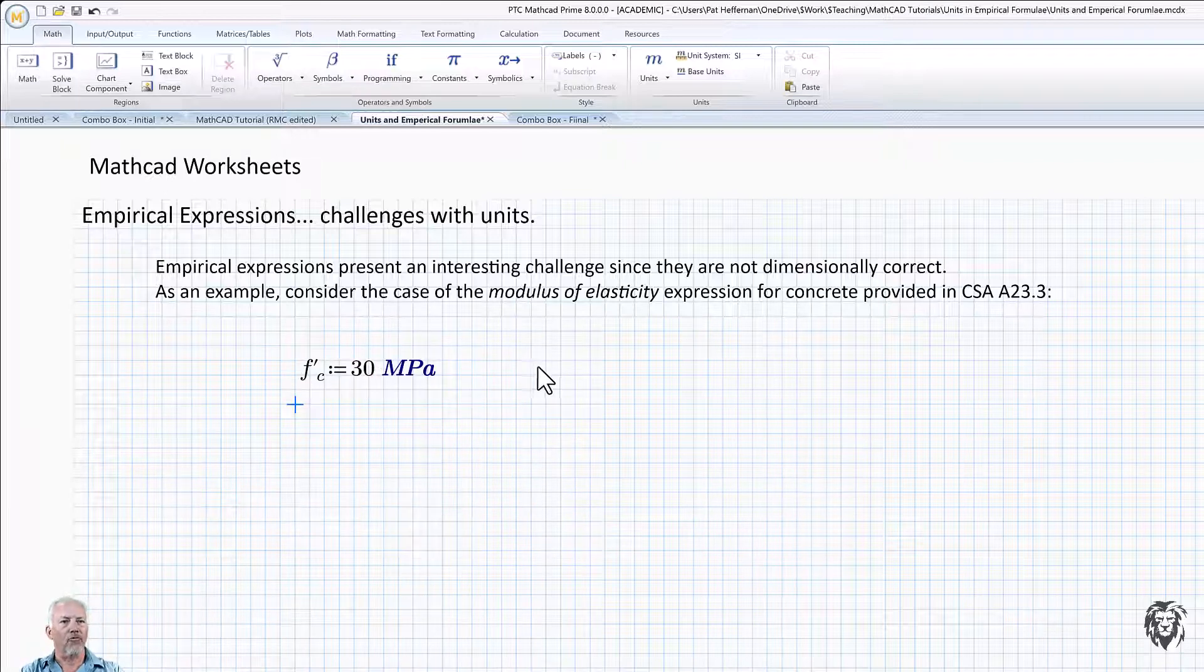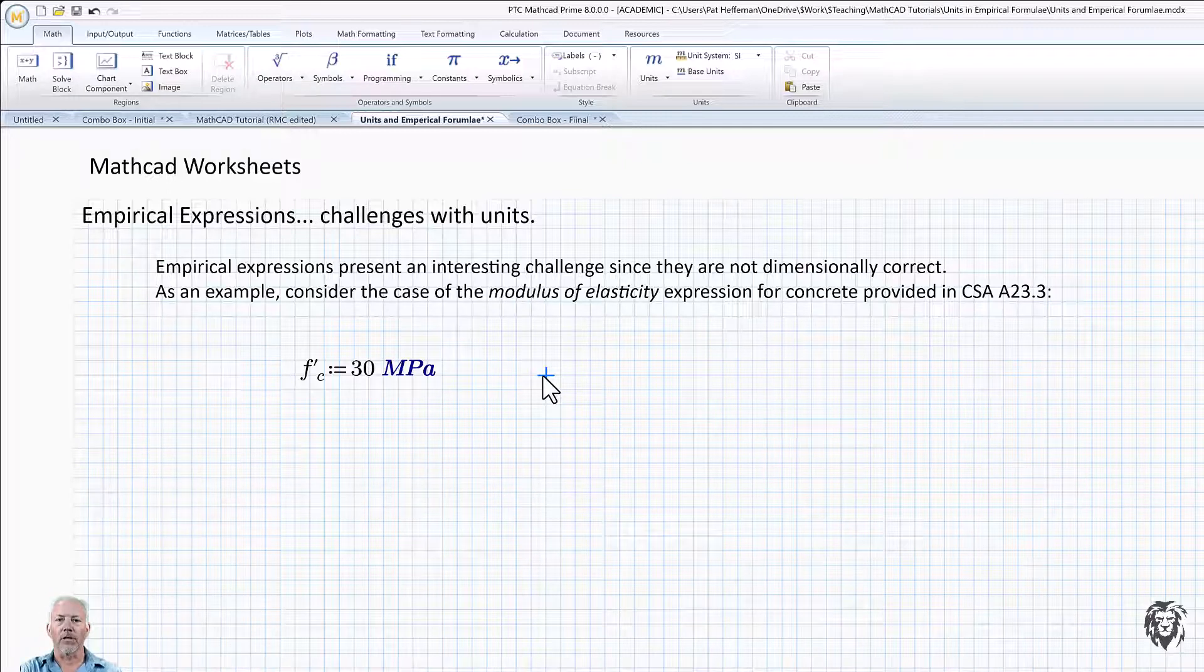And so that's great. Now, typically we calculate the modulus of elasticity for the concrete based on F prime C. And we do that in accordance with a clause that is given in the code. And so I'm going to draw that clause out from the code and we're going to put it in here.